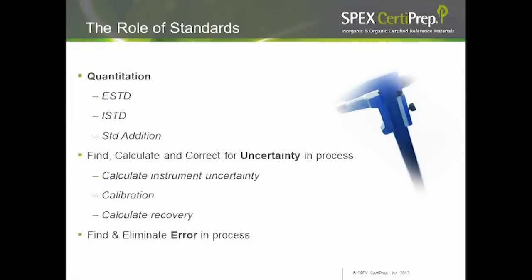There are quite a few roles for standards. The one most familiar to analysts is quantitation — using standards as an external standard, an internal standard, or for standard addition. Standards can also be used to find, calculate, and correct for uncertainty in your process, such as calibration of your instrument, instrument uncertainty, and calculation of recoveries. They can also be used to find and eliminate error in your process; by running standards throughout your process, you can monitor and identify any potential sources of error.